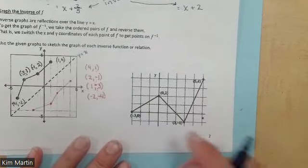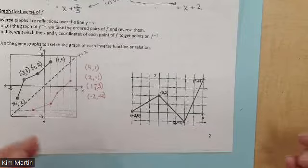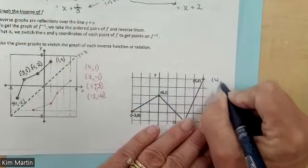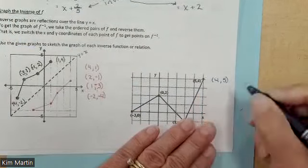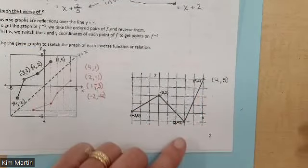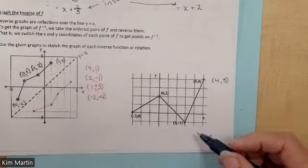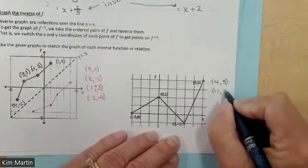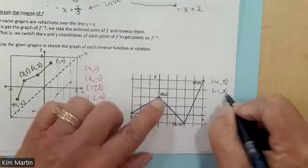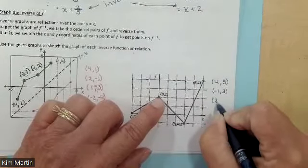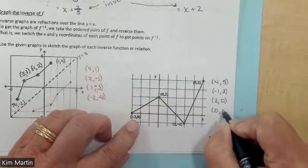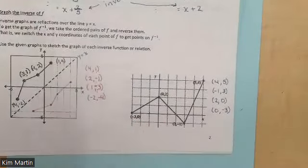For this one, they give us the points. The inverse would be (4, 5) — you just switch x and y. This point becomes (−1, 3), this one becomes (2, 0), and this one becomes (0, −3). Now let's graph that.